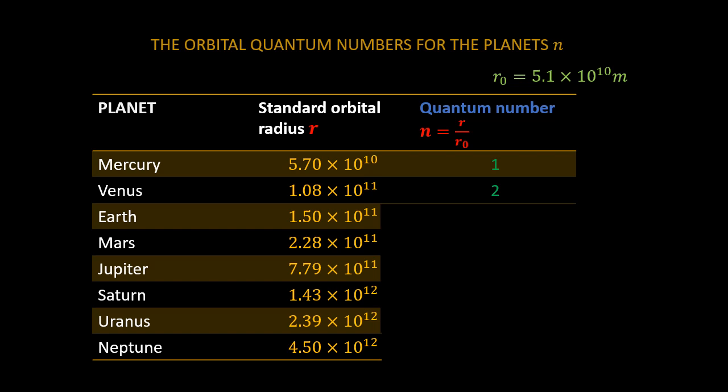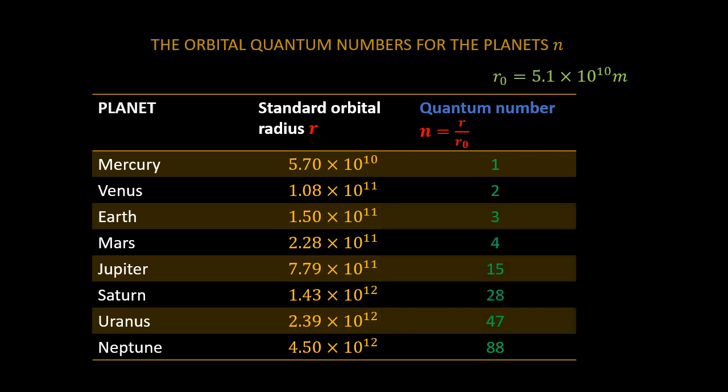Let's move down to the last planet and check. For Neptune, you have 4.5 exponential 12 divided by 5.1 exponential 10, which gives 88. If you continue like this for all the other planets, you get the following values for the quantum number.